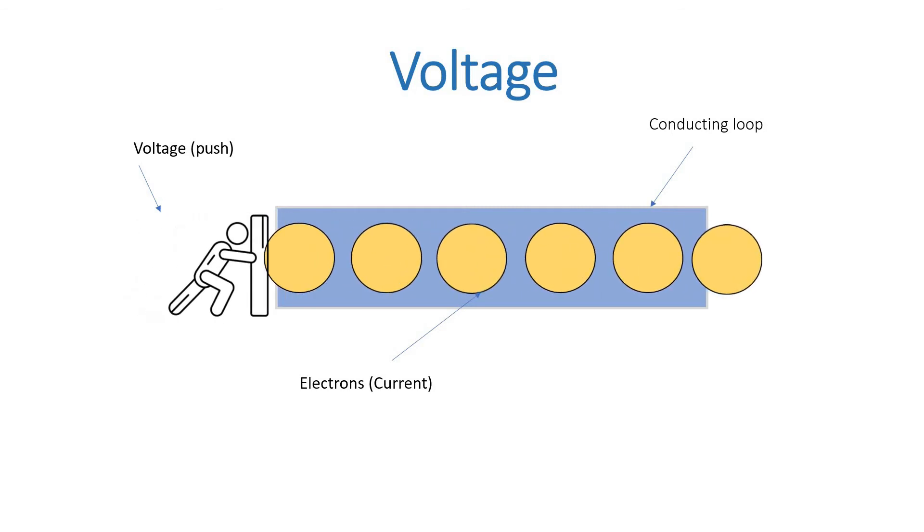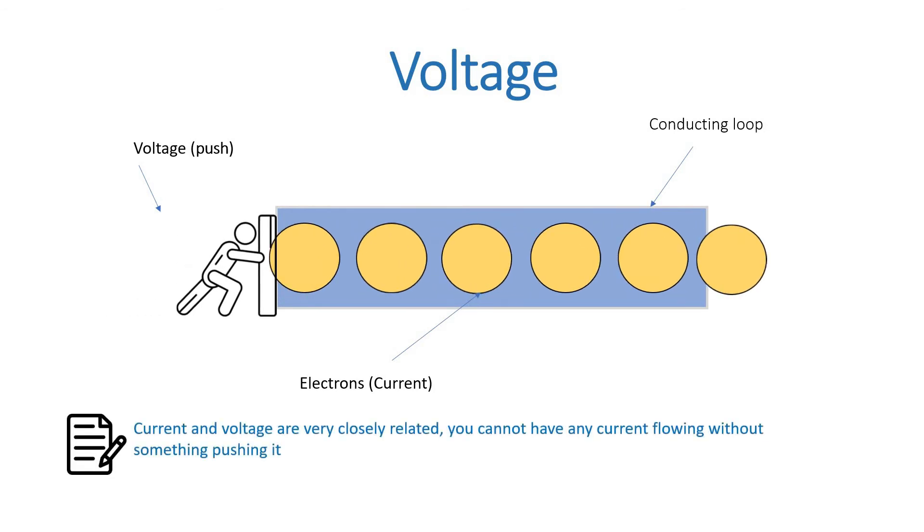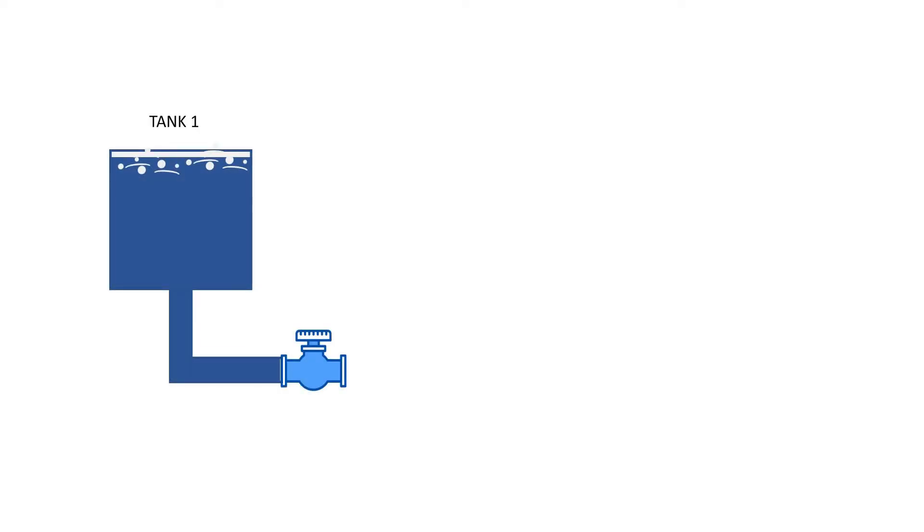You cannot have any current flowing without something pushing it. Here I'm going to explain you the voltage with water tank concept. If you have a water tank full of water then the mass of water causes a huge amount of pressure.